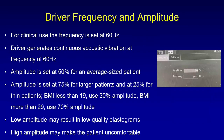You need to set the frequency and amplitude of the driver, as this determines the final results. The frequency for all clinical purposes is fixed at 60 Hz — prefixed by the engineer — and we can only change the amplitude. This is set at 50% for an average-size patient, 75% for obese patients, and 25% for thin patients. We can use BMI to regulate amplitude: less than 19 use 30%, more than 29 use 70%. Low amplitude may result in low-quality elastograms, while high amplitude may make the patient uncomfortable due to vibrations.